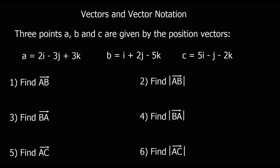3 points a, b, and c are given by position vectors. When it says position vectors, that just means it's a fixed point on a 3D axis. So the point a is 2 along the x, 3 down the y, and 3 out the k. A, b, and c are fixed points. Find the vector a to b — how far is it from a to b? If ever we want to find a to b, we just take b and take away a. So a to b means b take away a.